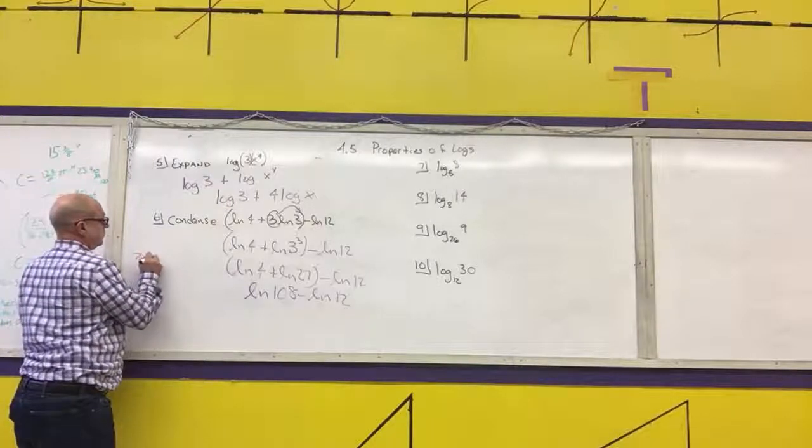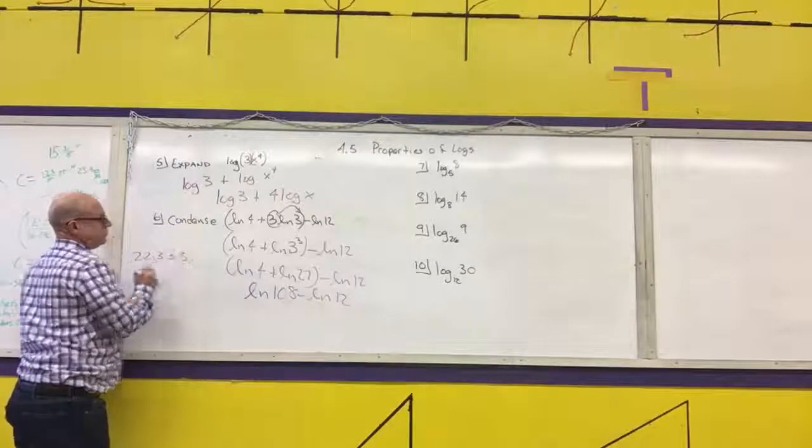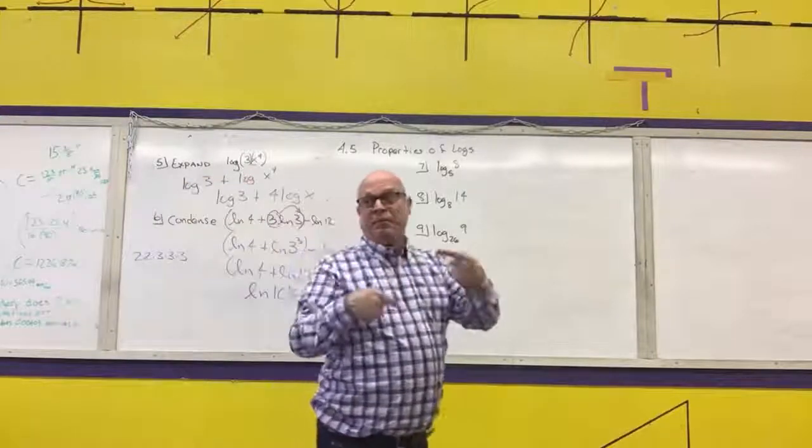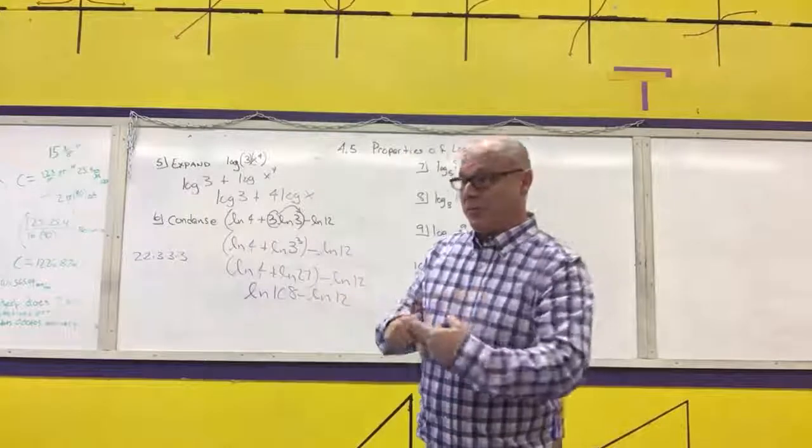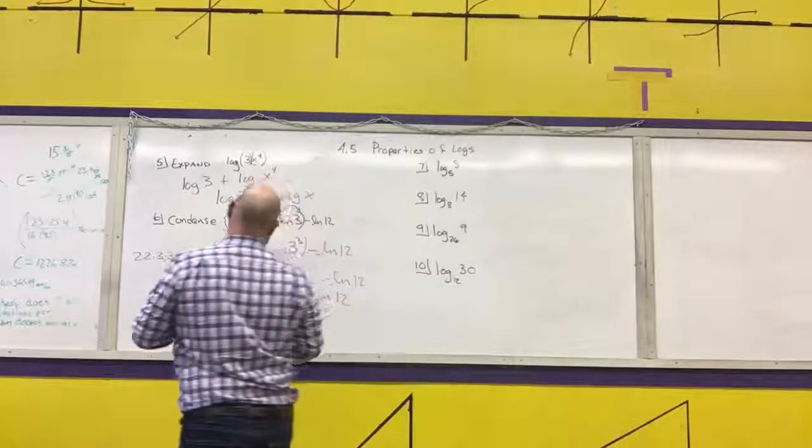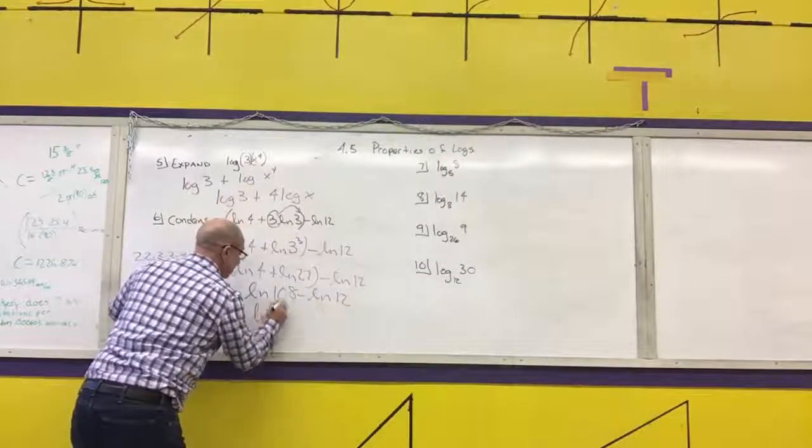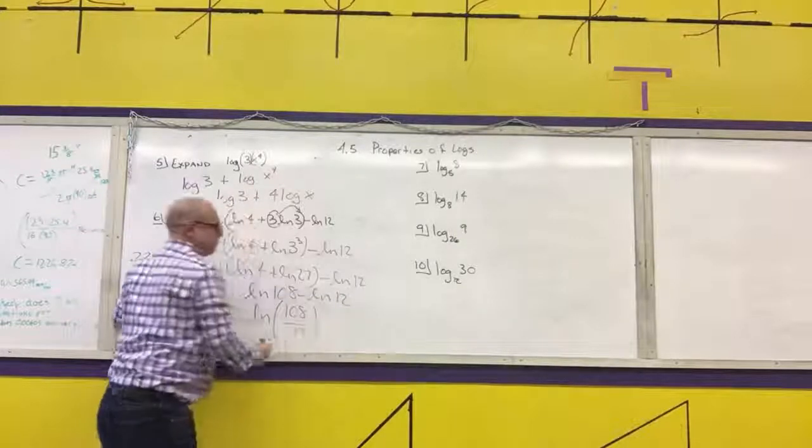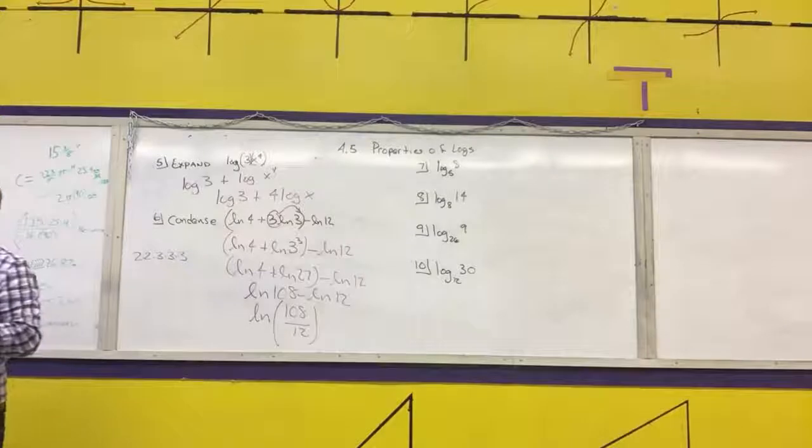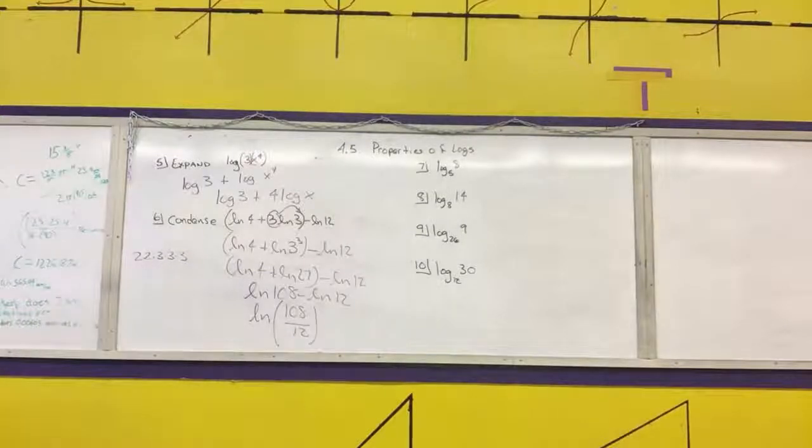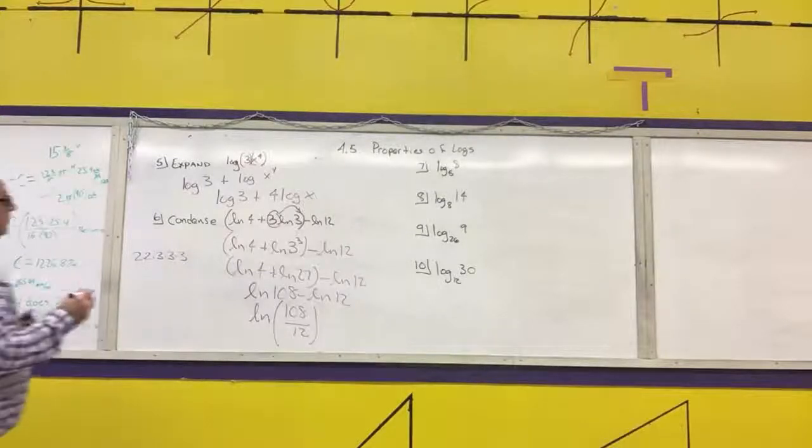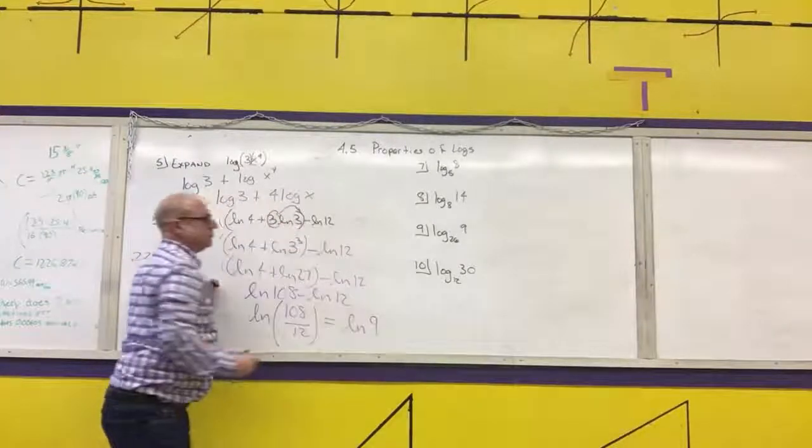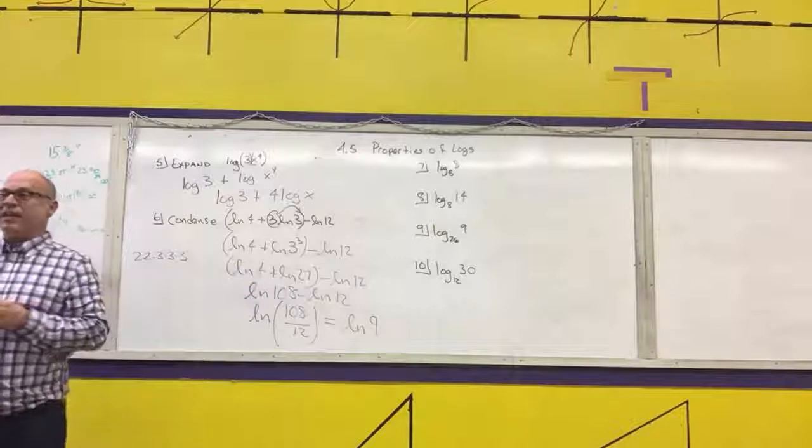A subtraction problem dealing with exponents comes from what type of problem? A division problem. Twelve goes into one hundred and eight how many times? Nine. And that would be the answer. That is the exact answer.